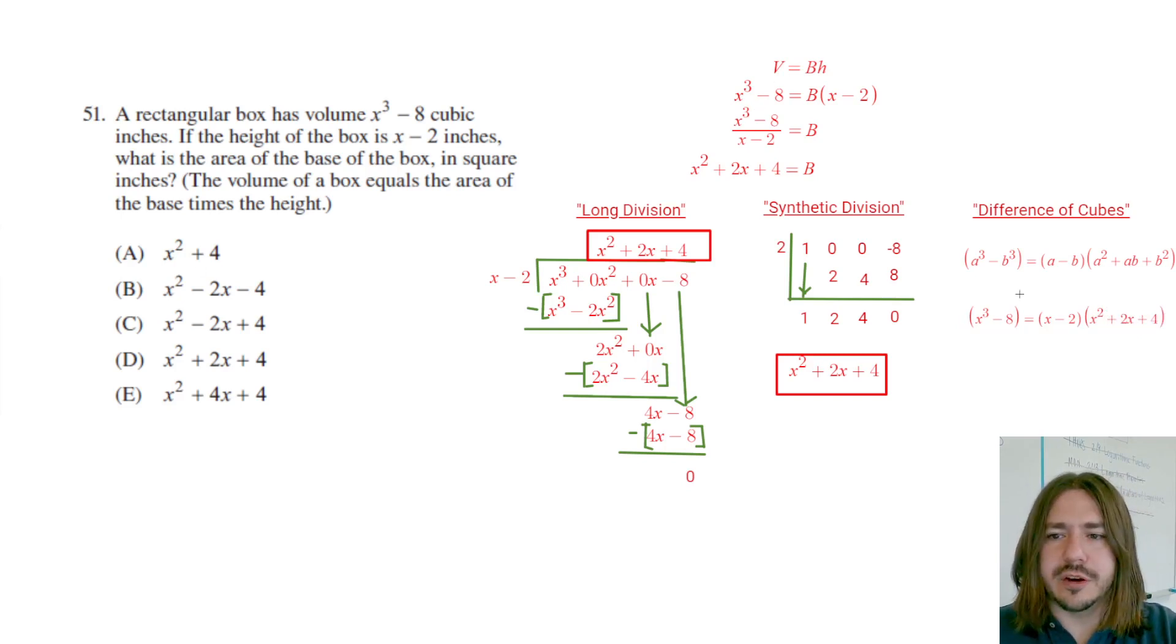And so the volume here, which is x cubed minus 8, equals the height x minus 2 times the base area, which you can see is right here. So these are three different ways on how you can get that answer. And you just pick whichever one you feel the most comfortable with. If you can memorize the difference of cubes, that's great. That would be the fastest way.